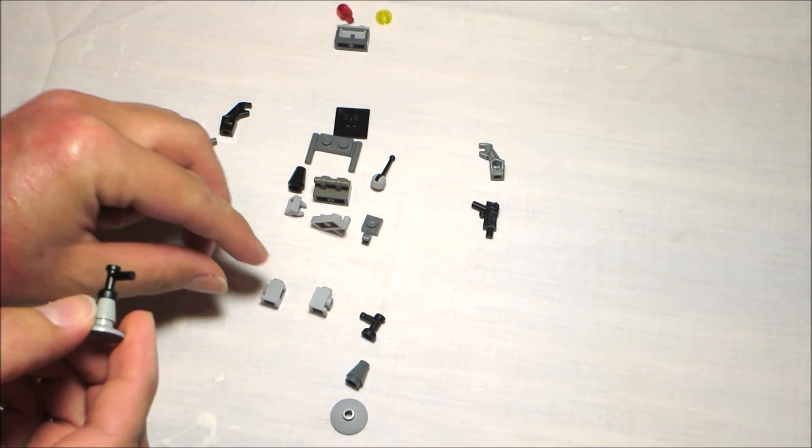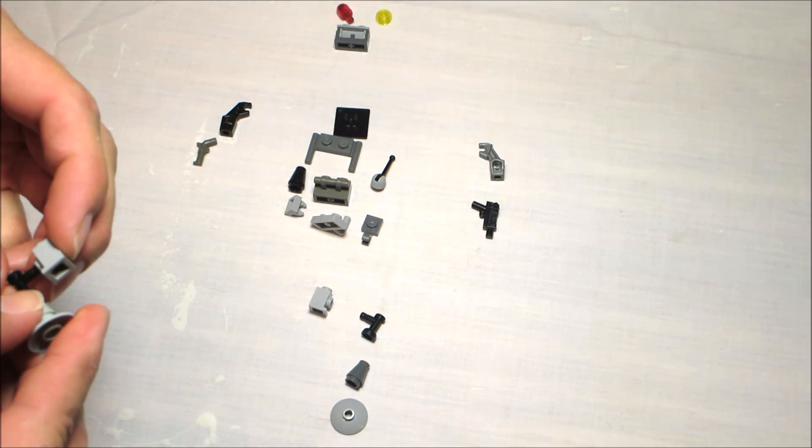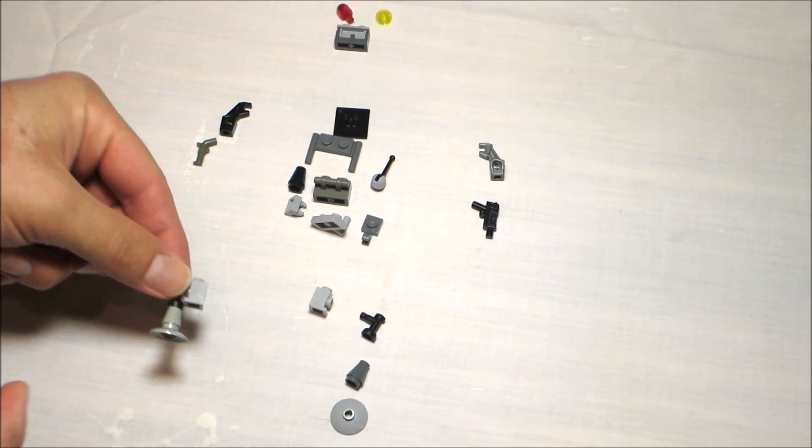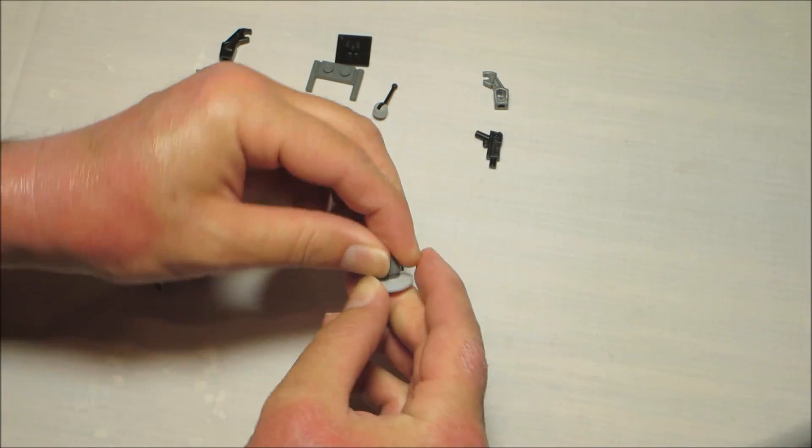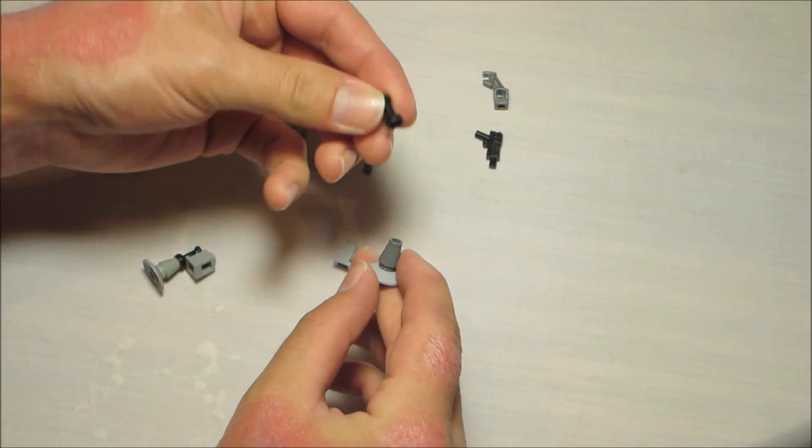We're going to use this spigot part as a hip joint and a 1x1 brick with an open hole. So it's a four piece leg and we'll do the same on the other side.